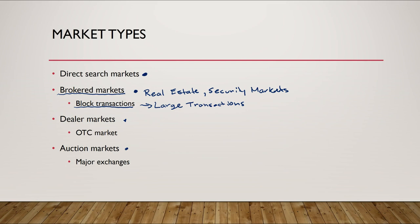The third type is dealer markets, which is what we refer to as the over-the-counter market, or OTC. This is where predominantly a lot of bond trading happens. The dealer acts as a principal on the transaction — they hold an inventory of the specific assets they're trading and make a market for them. They post a bid and ask spread at which they're willing to buy and sell, trading out of their own inventory. That's a dealer market, also known as an over-the-counter market.